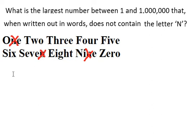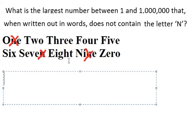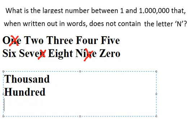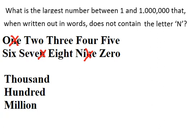Now let's look at the place values. We have thousand, hundred, and million. We can see that thousand, hundred, and million all need to be crossed out because they all contain the letter N.